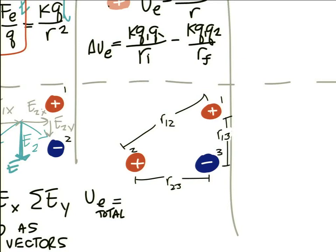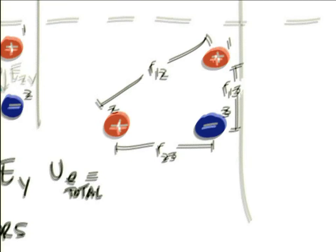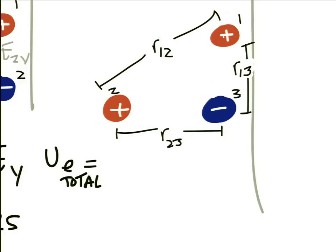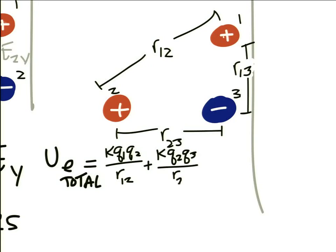Be careful with labeling. The total electric potential energy is the sum of all pair energies: KQ1Q2/R_12 plus KQ2Q3/R_23 plus KQ1Q3/R_13. That is the total amount of energy required to assemble the system.